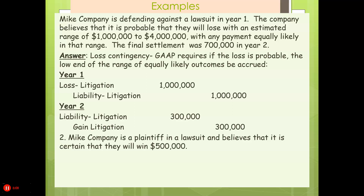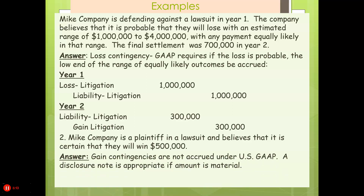What if a company is involved in a lawsuit and they're reasonably certain that they're going to receive $500,000? Again, gain contingencies are not accrued under GAAP. A disclosure note is appropriate if the amount is material.